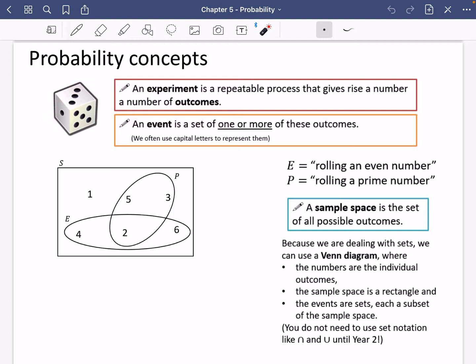Although the outcomes on this dice are 1, 2, 3, 4, 5 and 6, you could have an event like these ones down here. The event could be rolling an even number, which means if the dice lands on 2, 4 or 6. We often use capital letters to represent these events. E is the event of rolling an even number on a six-sided dice, and P is the event of rolling a prime number. The sample space is the set of all possible outcomes, and this is the sample space that I've drawn here for it.